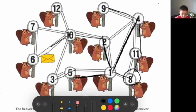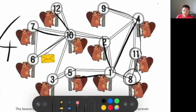Then finally 10 passes it to 6, 7, and 12. So this took 4 turns for the message to reach from number 8 to the entire colony.